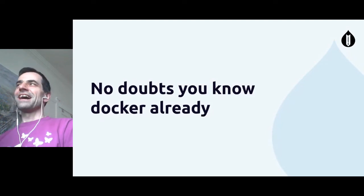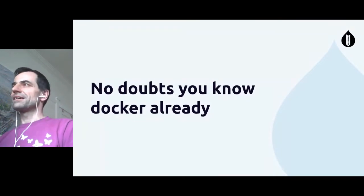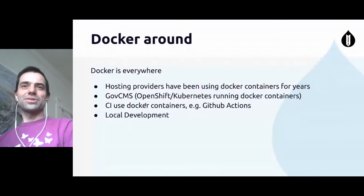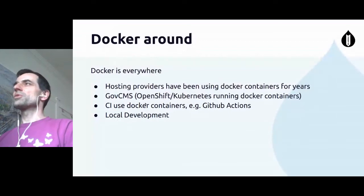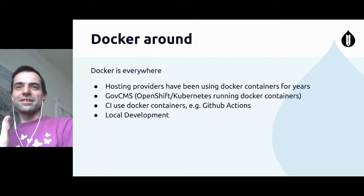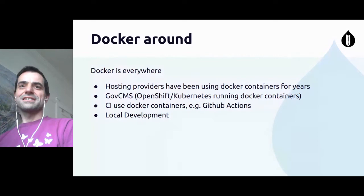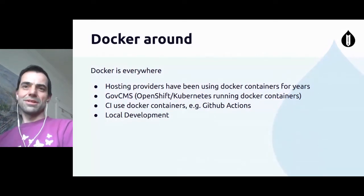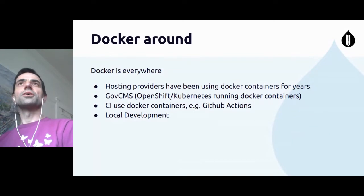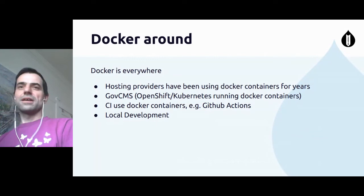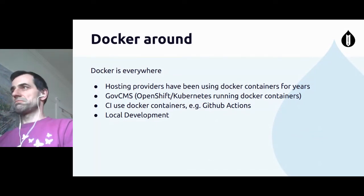There are no doubts that you have Docker already somewhere, because Docker is everywhere. Hosting providers have been using Docker for years. GovCMS — the current version of GovCMS — runs Docker on Kubernetes or OpenShift. CIs these days use Docker containers. GitHub Actions lets you choose at the beginning what you want to run it on — like Ubuntu. You have to choose what container to run your pipeline on. And local development uses Docker heavily.